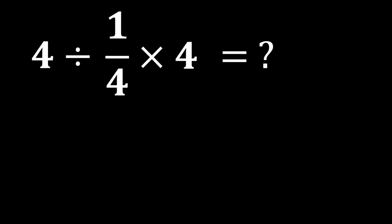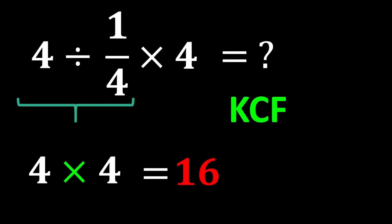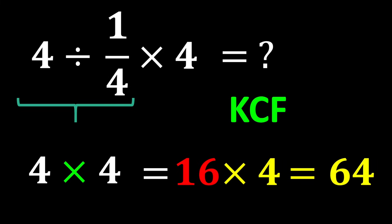Now consider: 4 divided by 1 over 4 multiplied by 4. In this expression, we have both division and multiplication. Since they have equal priority, we move from left to right and perform whichever comes first, so we first perform 4 divided by 1 over 4. Using the KCF rule — keep the first number, change division to multiplication, flip the second number — 4 divided by 1 over 4 becomes 4 multiplied by 4, which equals 16. And in the end, 16 multiplied by 4 equals 64.